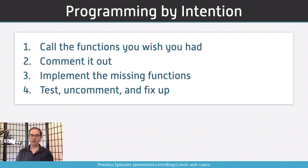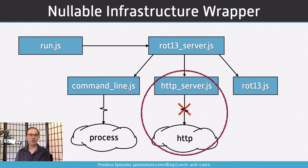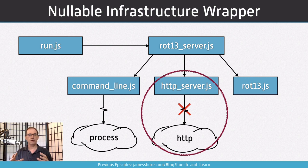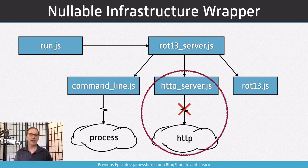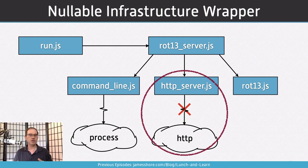Second: how do we test without launching the server? We've answered this in previous episodes — we're going to write a nullable infrastructure wrapper. All of the HTTP code is going to be wrapped up in an HTTP server class, and then we're going to make that HTTP server nullable, giving us the ability to turn it off. Third — and we're actually not going to get to this today — is how do we test that our code responds to requests? We'll get to that next week.